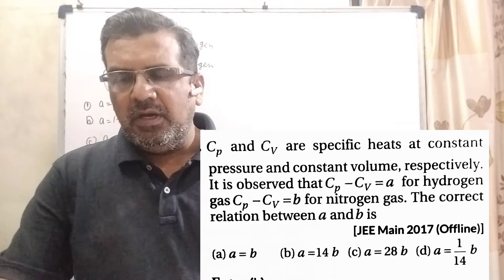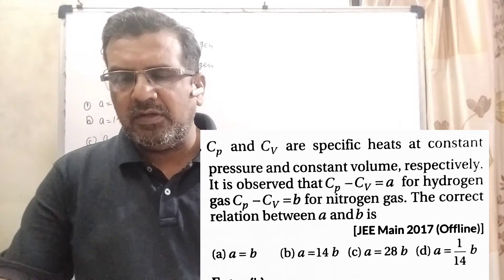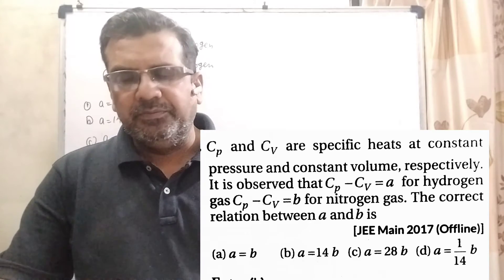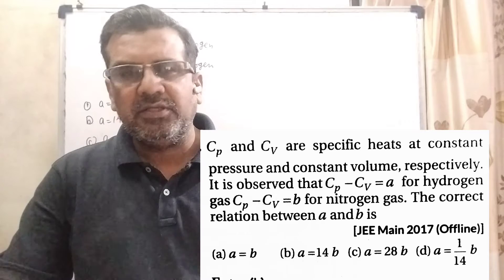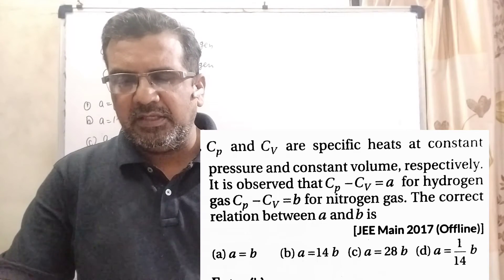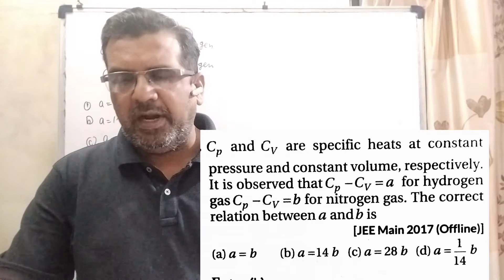Cp and Cv are specific heats at constant pressure and constant volume respectively. It is observed that Cp minus Cv equal to A for hydrogen gas and Cp minus Cv equal to B for nitrogen gas.